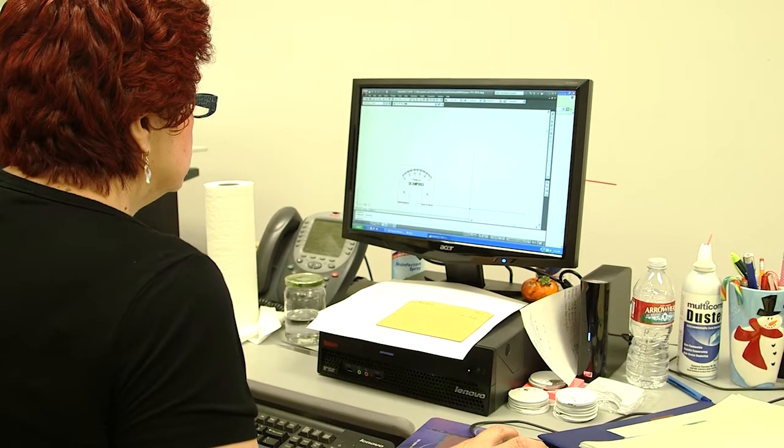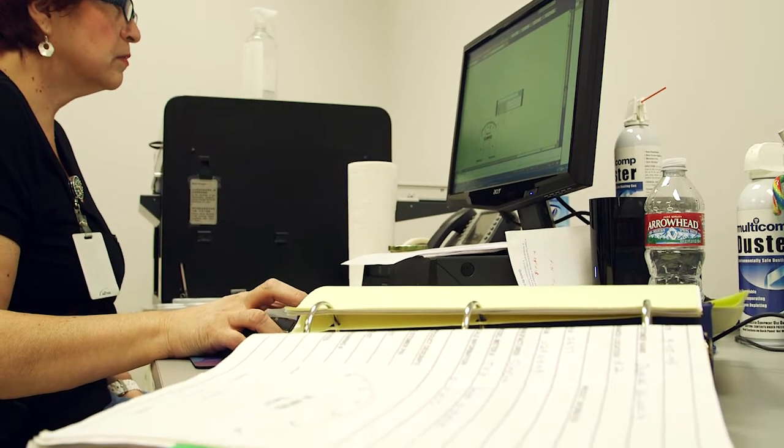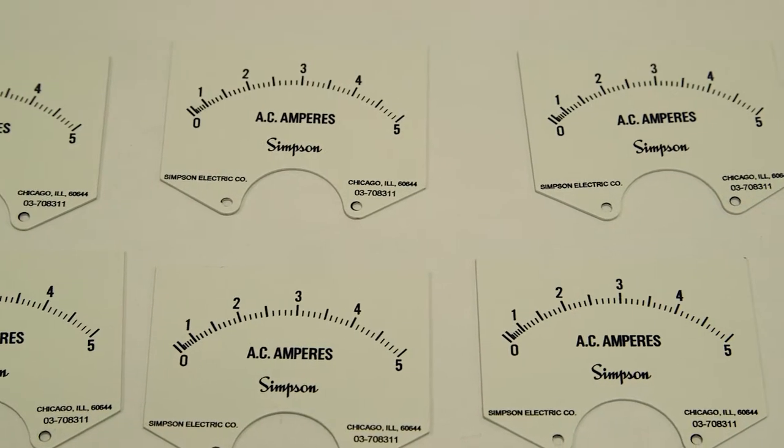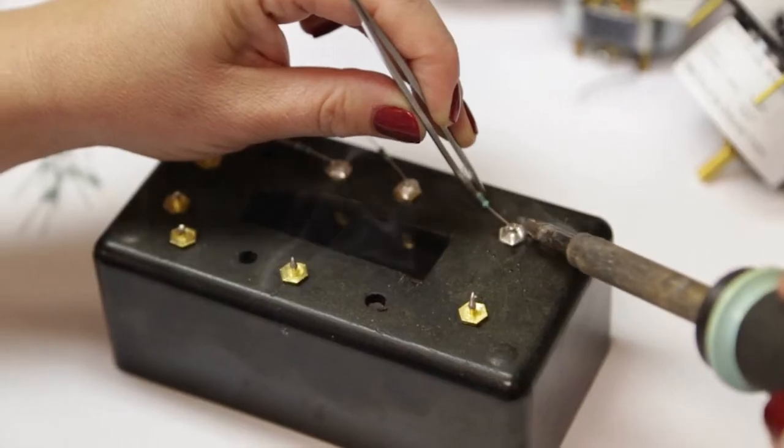That's why there's no one specific industry that we satisfy. We satisfy a wide range of industries, even a bakery that has to watch the temperature when it's cooking, to when they're shooting off a rocket and they want to know the flow of oxygen into that engine. We can make a panel meter to measure all those different items.